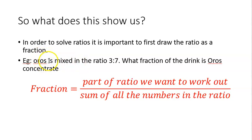Remember, Oros is mixed in the ratio 3:7. What fraction of the drink is the Oros concentrate? We use this equation: the fraction equals the part of the ratio we want to work out over the sum of all the numbers in the ratio. So we take the three because that's the Oros, and put it over 3 plus 7, which gives us 3/10. Once we have this fraction, we multiply it by the total liquid.